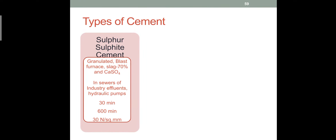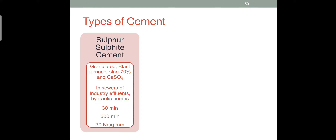The third cement is sulphate cement, also called sulfate cement. It contains more granulated blast furnace slag, which is metal industry waste, and calcium sulfate is more, so it is called sulphate cement. The initial setting time is 30 minutes, final setting time is 600 minutes or 10 hours, and strength is 30 N/mm².